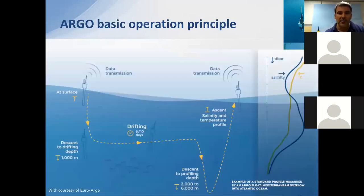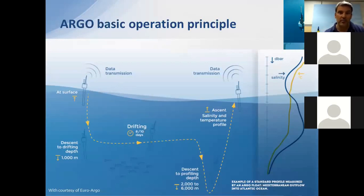Before dealing specifically with BGC Argo, a few words about the basic mission of an Argo float. A float has to operate for a minimum of 4 years and cycle every 10 days, with a scheme of spending approximately 9 days parked at 1,000 decibar, then descend to 2,000 decibar to start the ascent profile, with the acquisition of different variables. For the core Argo mission, these variables are pressure, temperature, and salinity.